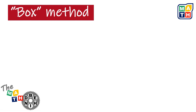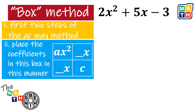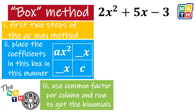The box method is one of the unique methods that can factor quadratic expressions. This method involves three steps. Step I, we are to duplicate the steps of the AC way method. Step II, we need to come up with a box or table where we place the coefficients. And Step III, we are going to use common monomial factoring per column and row to get the intended binomials.